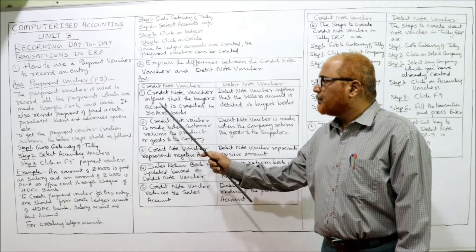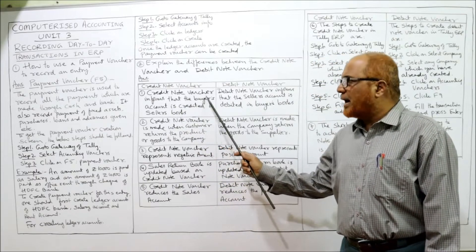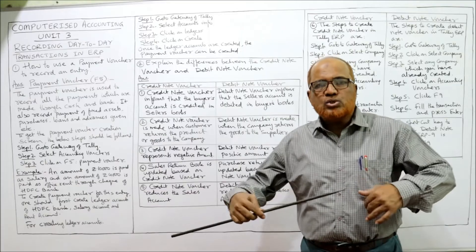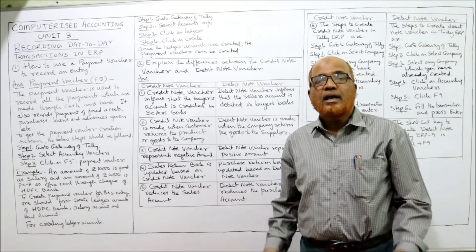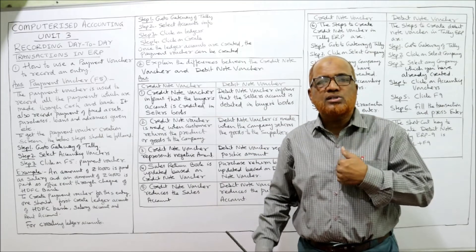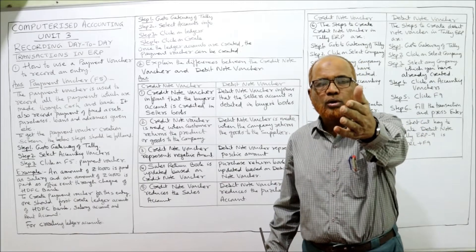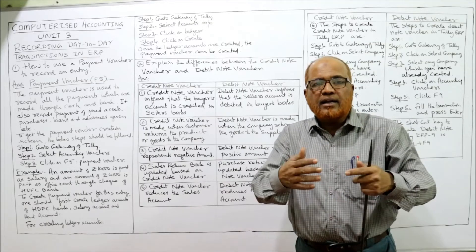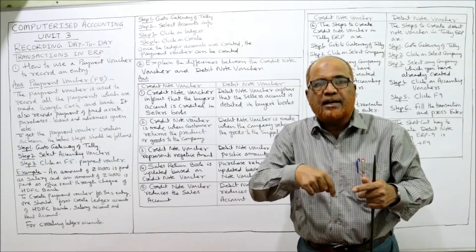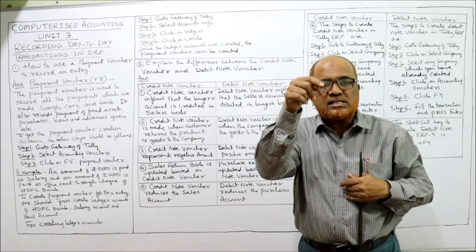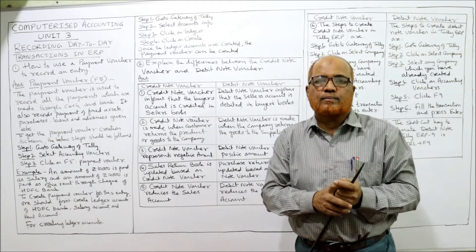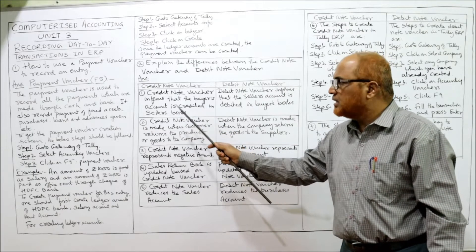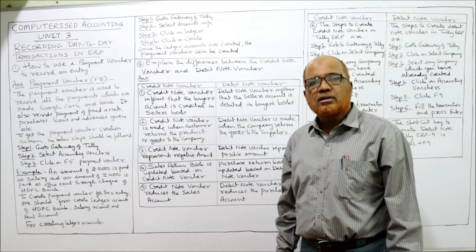The credit note voucher informs that the buyer's account is credited in the seller's books. Suppose I am the seller and you are the buyer. I sold goods to you on credit, and later you returned some goods — that is called sales return. I will make a credit note indicating that your account is credited in my books.